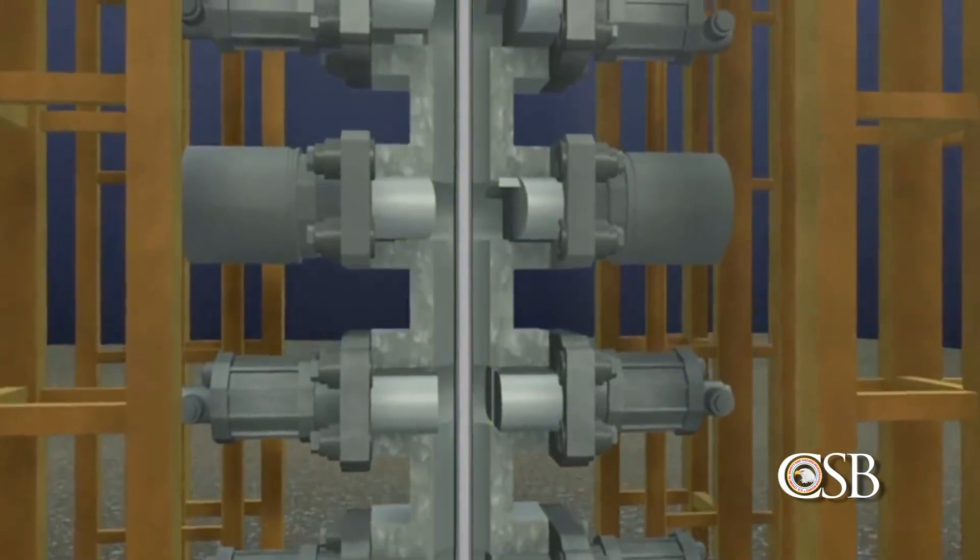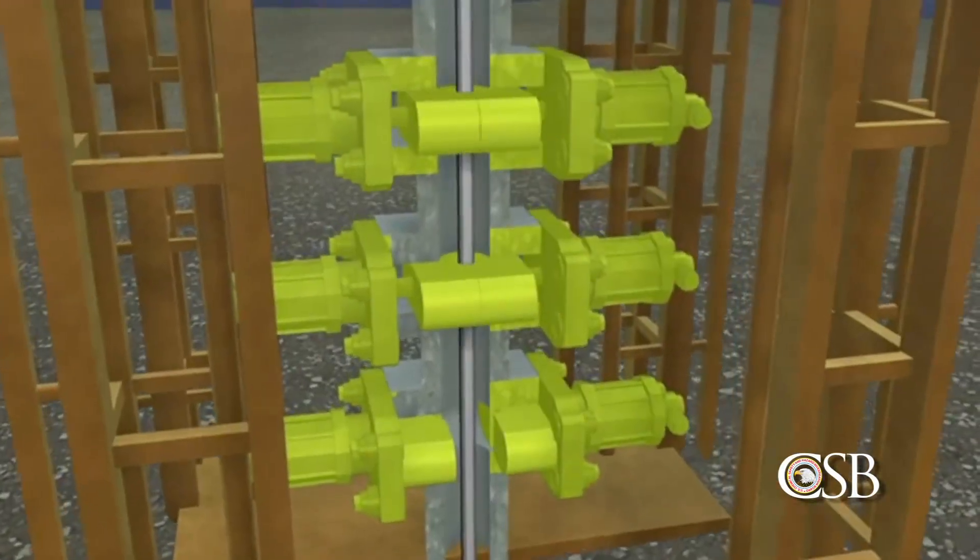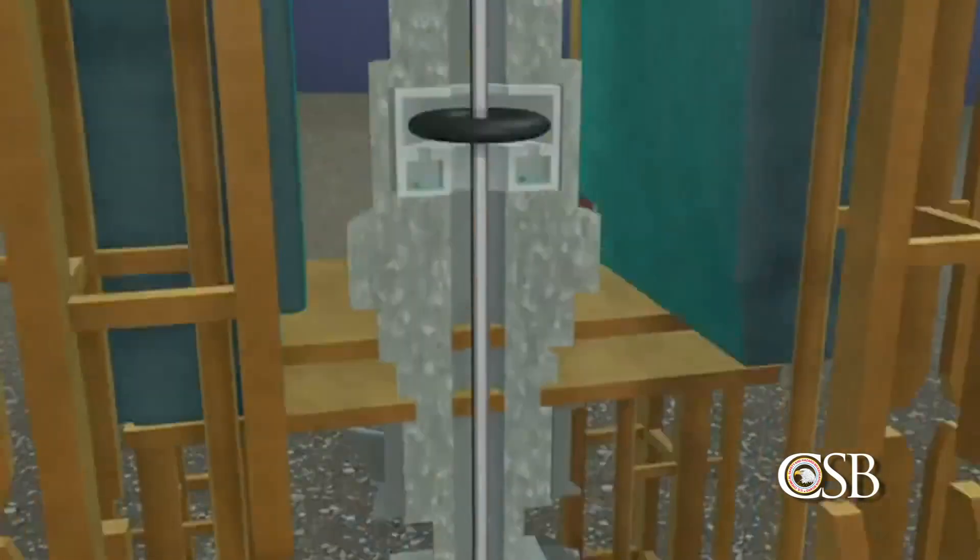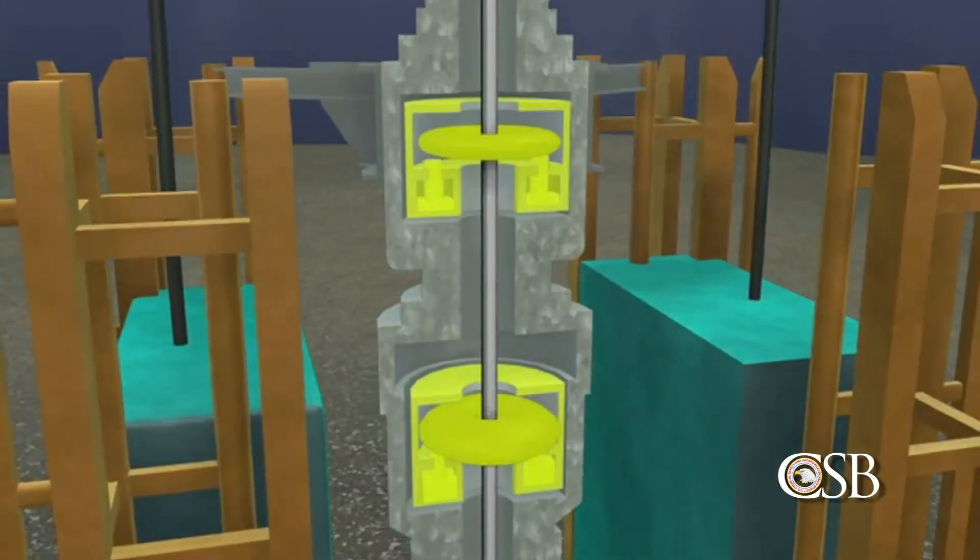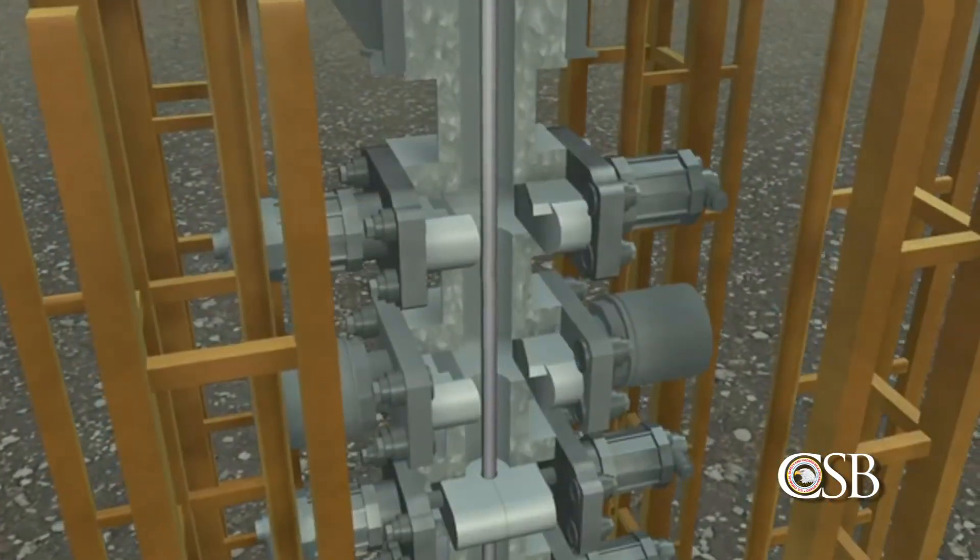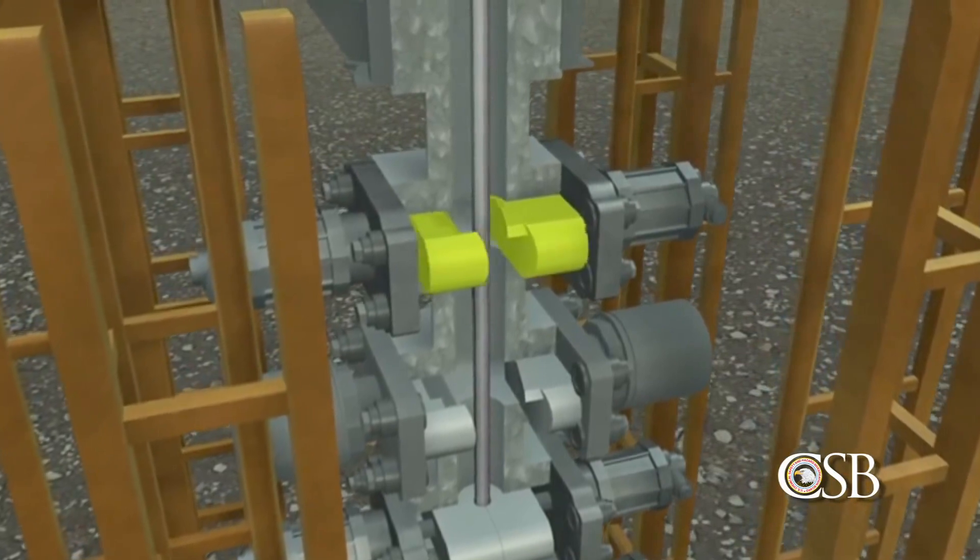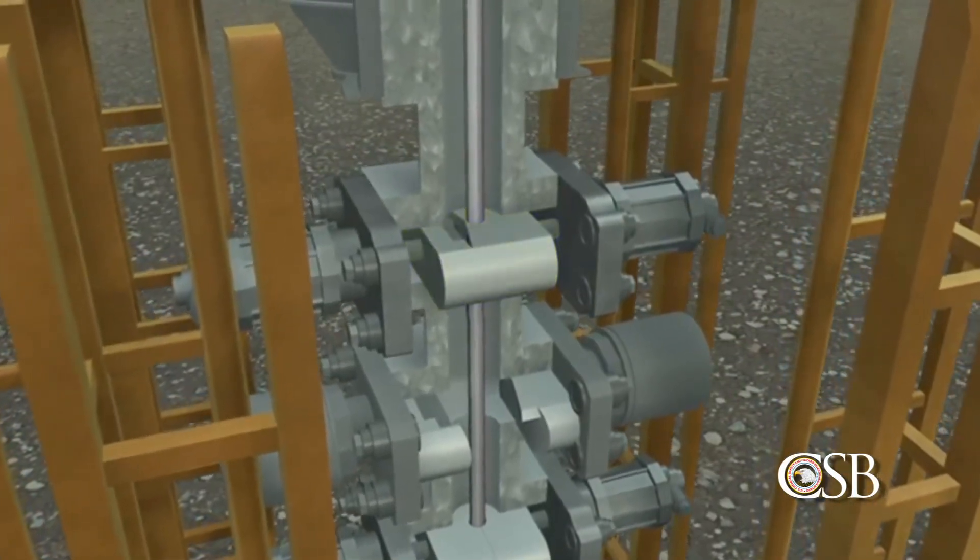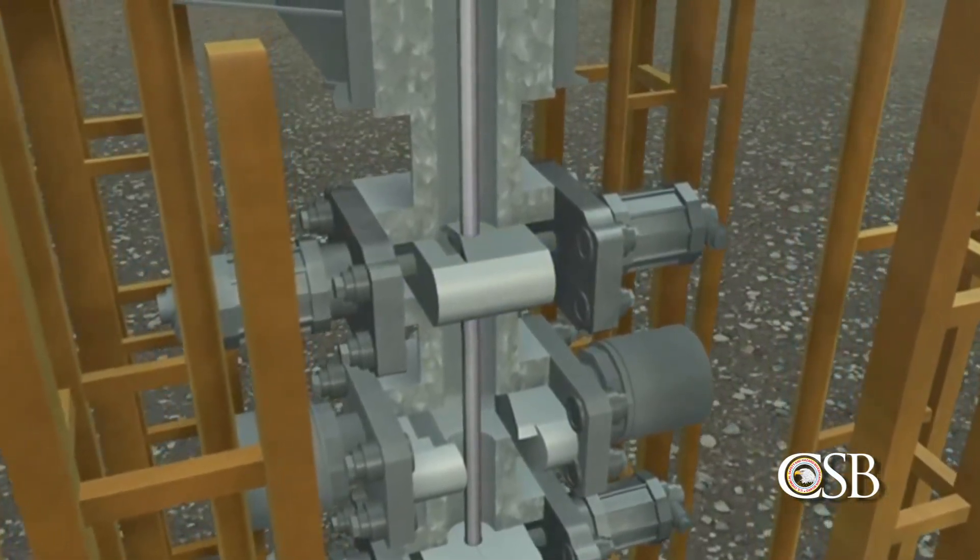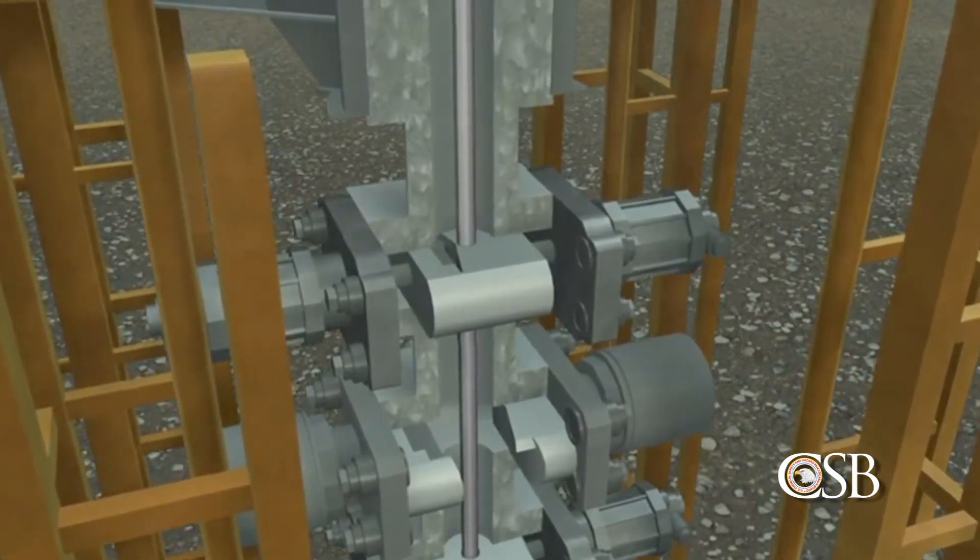To do this, the crew can manually close pipe rams and donut-shaped rubber devices known as annular preventers. If those devices should fail to work, the last resort is a pair of sharp metal blades which form a blind shear ram designed to cut the drill pipe and seal the well. The blind shear ram can be activated manually or by automated emergency systems.